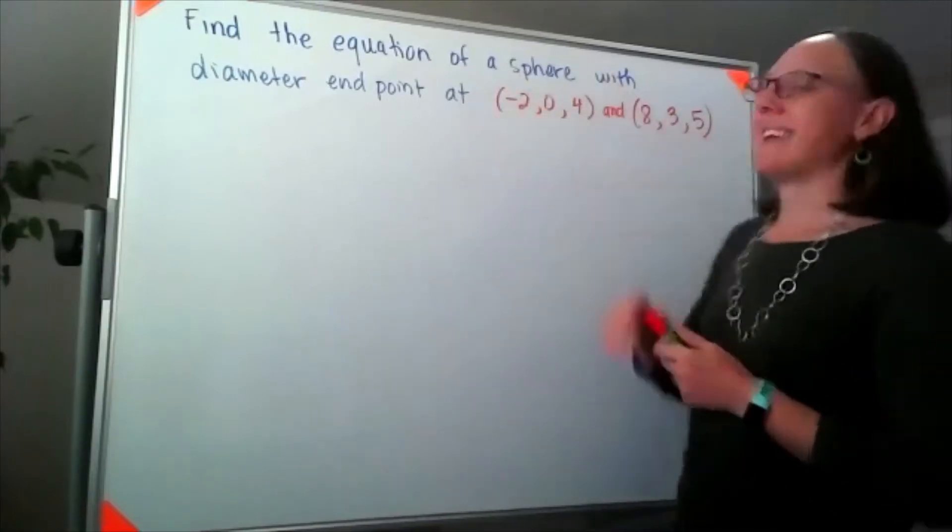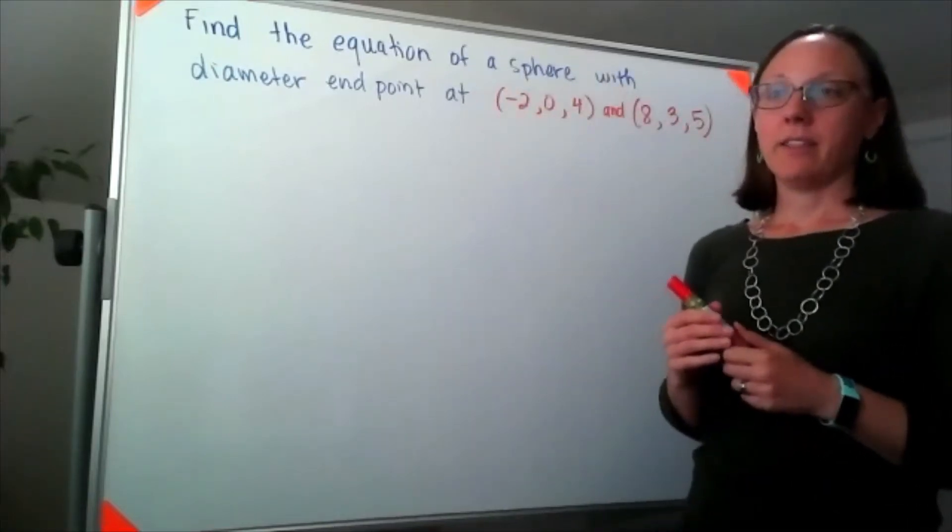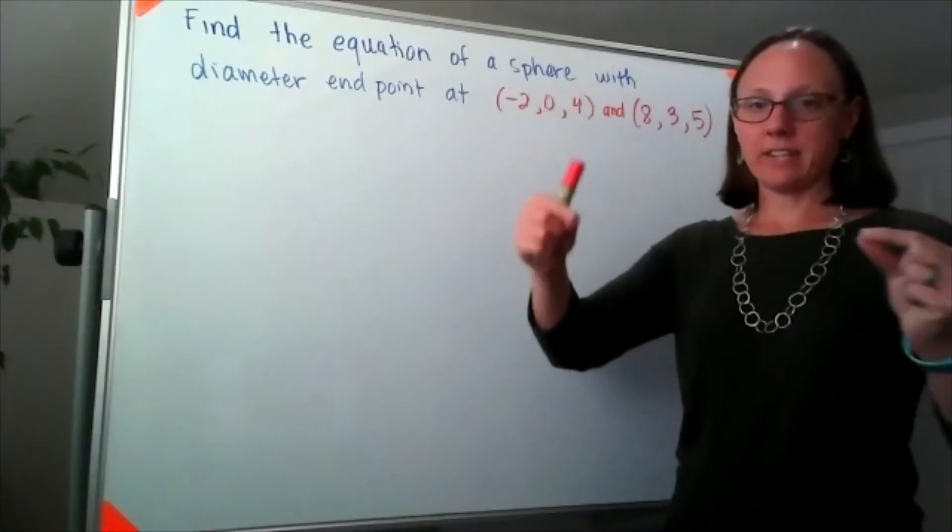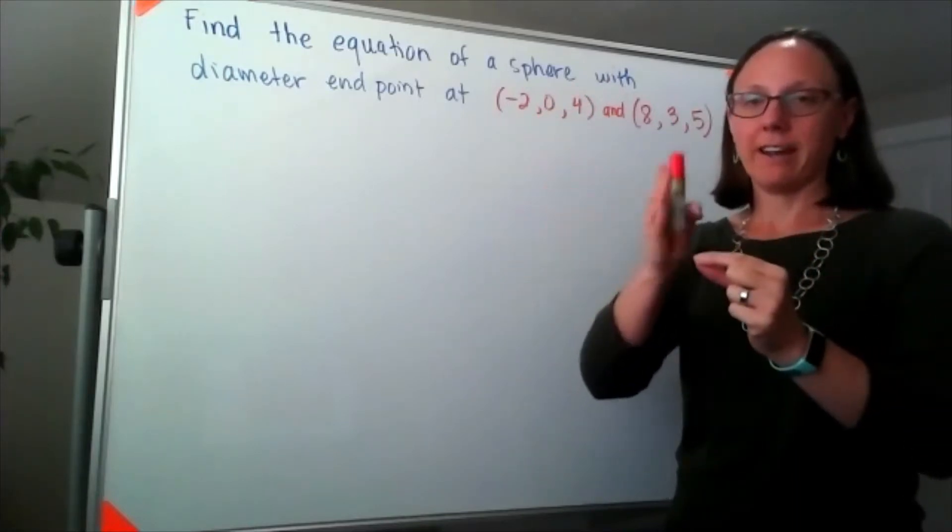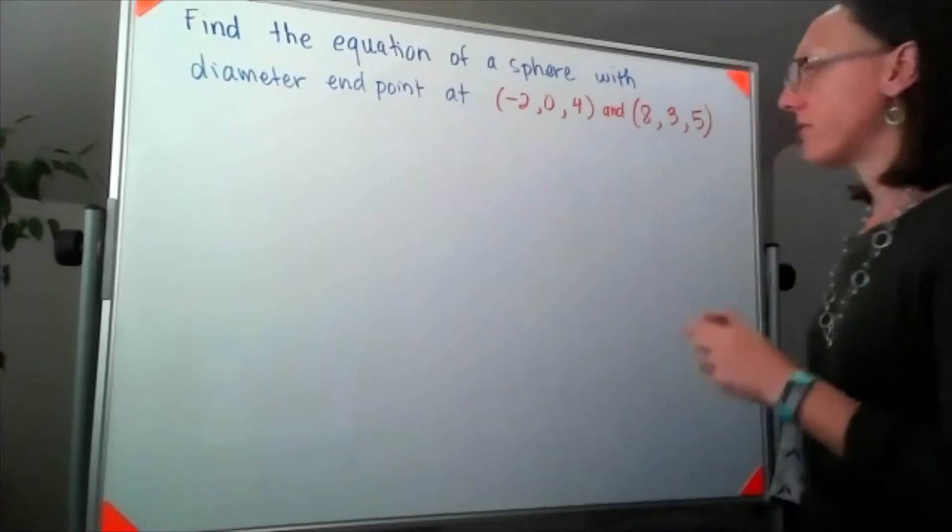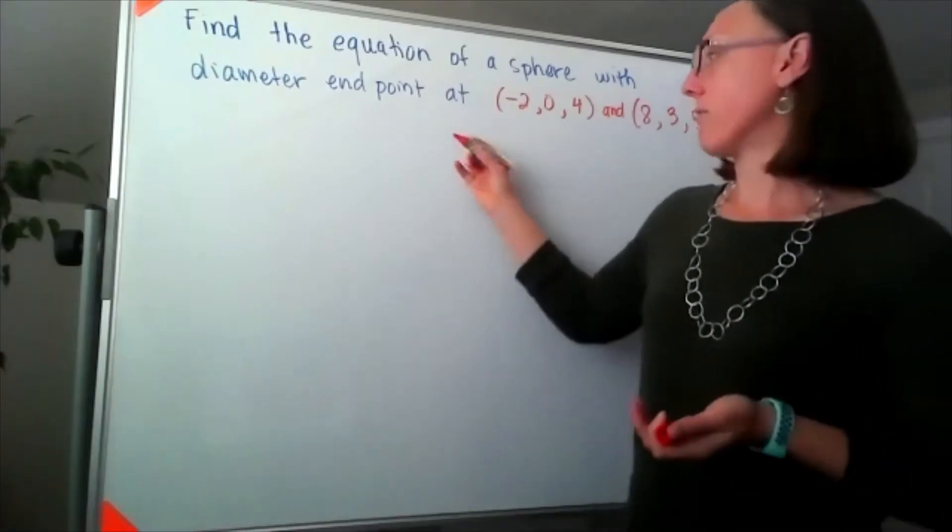Well, if these represent diameter endpoints, then if these are the endpoints for the diameter of a circle, to get the center, I need the midpoint. So the first thing that I would do is find the midpoint for that circle.